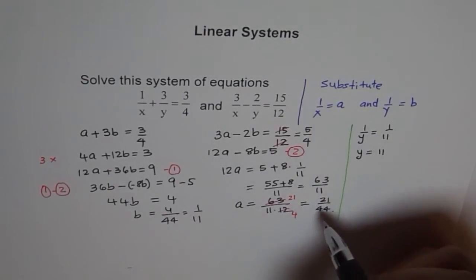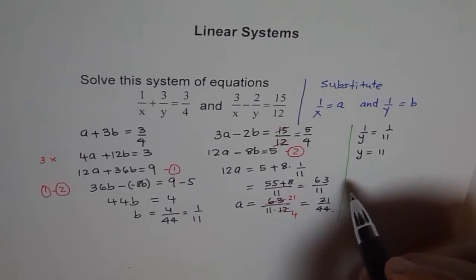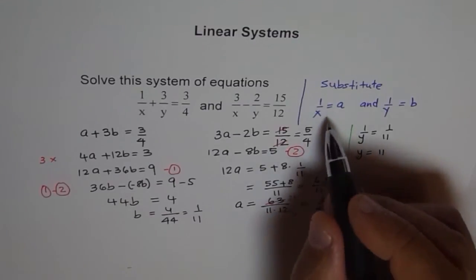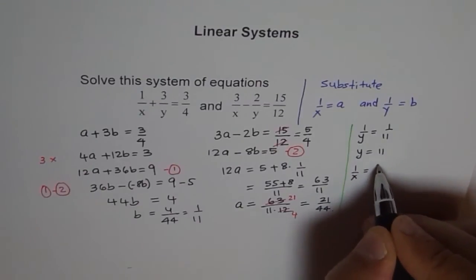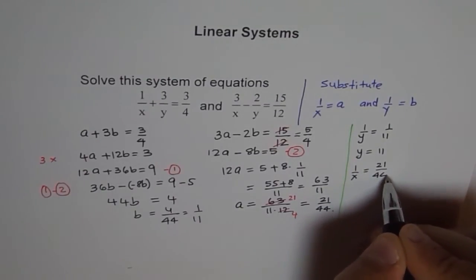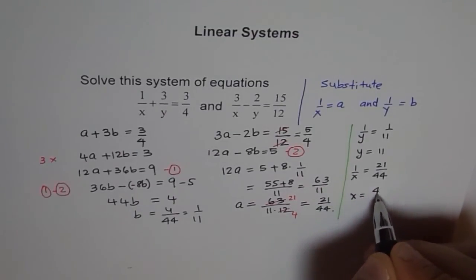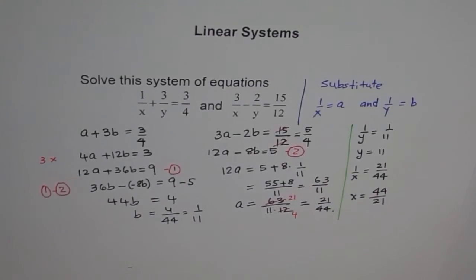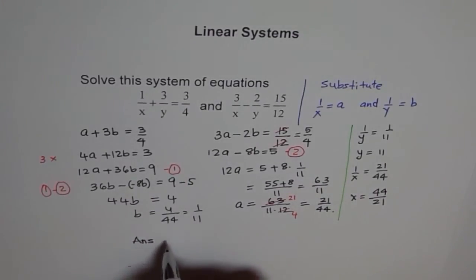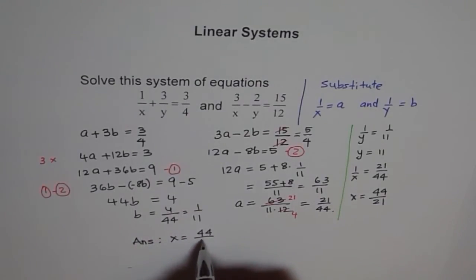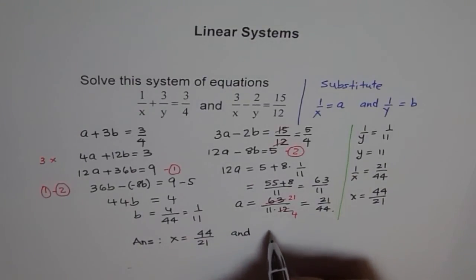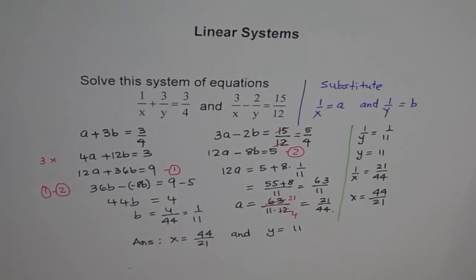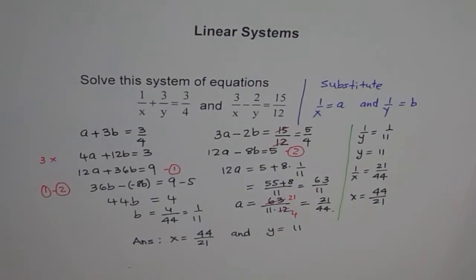On the other hand, A is 21 over 44, so we can say 1 over X equals 21 over 44, which implies X equals 44 over 21. So our answer is X equals 44 over 21 and Y equals 11. That's the solution for the given system of equations.